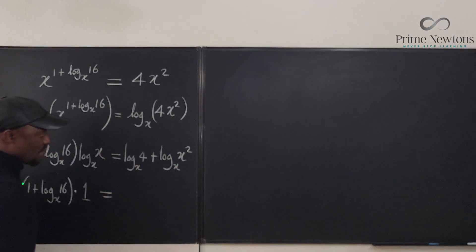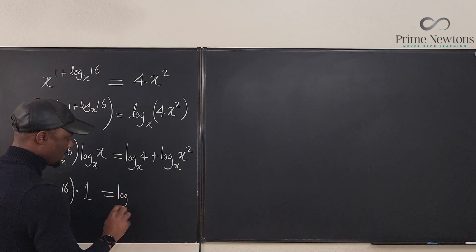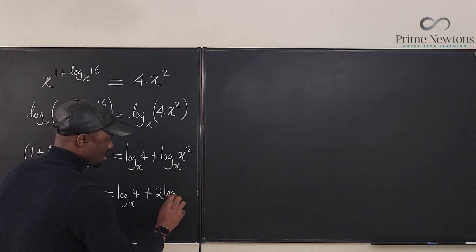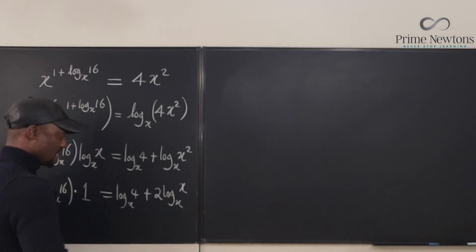And on this side, what do I have? Well, this is going to come down here. So what I have is log base x of 4 plus this is 2 log x base x. Log x base x is just 1.